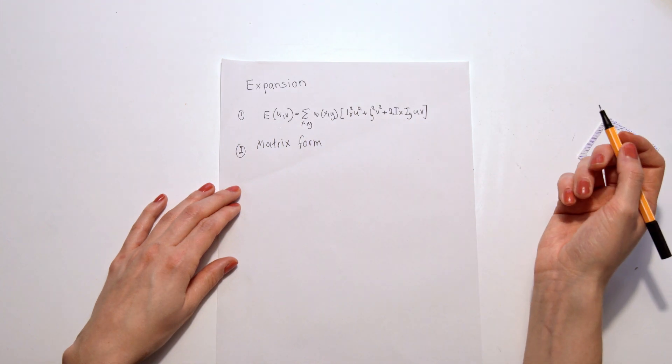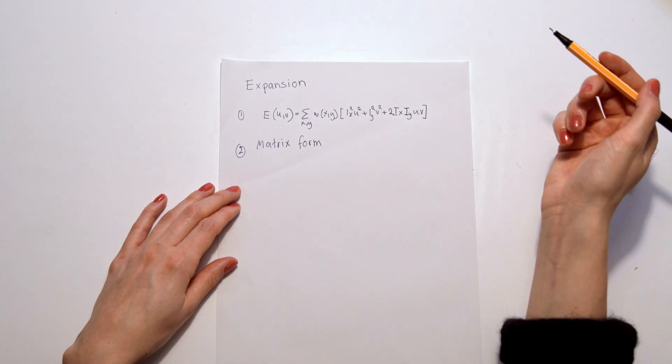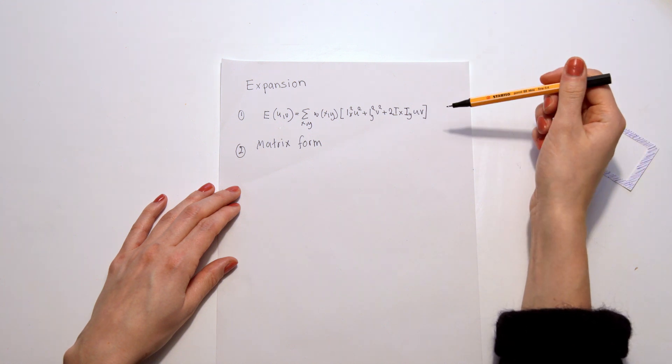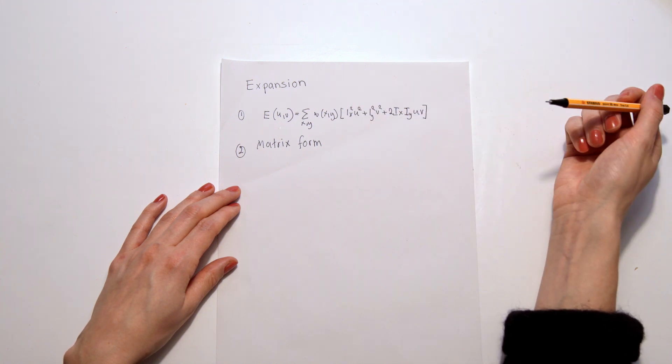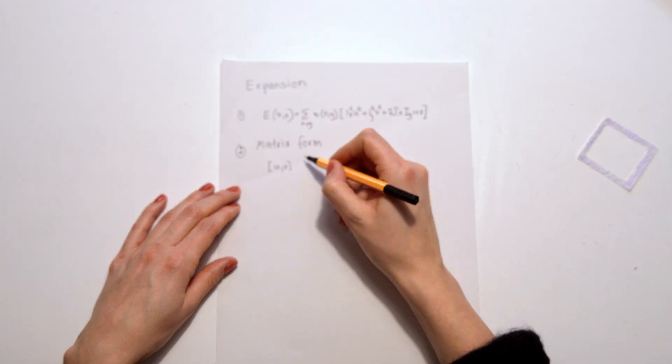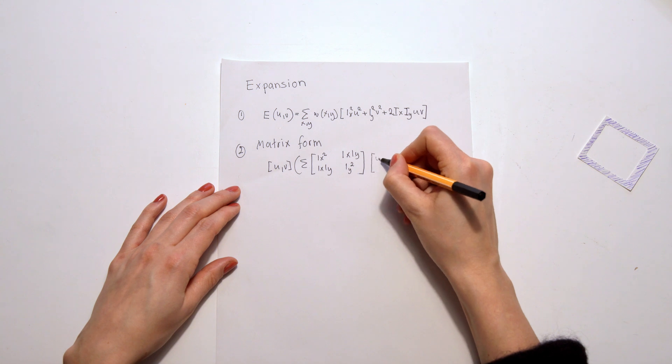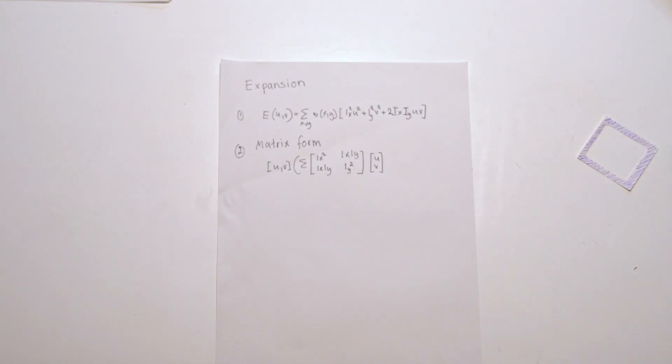Now we can rewrite it in a matrix form. So what we did is we did the first Taylor expansion and we then expanded the square from this. And then we have to add U and V again so we can make the expression squared.